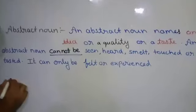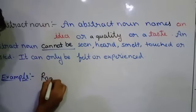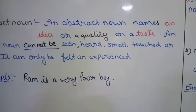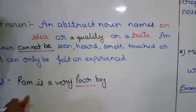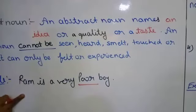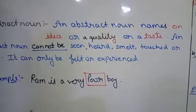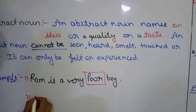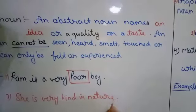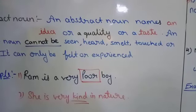For example: 'Ram is a very poor boy.' We cannot see the poverty of Ram, but by the behavior and situation of that person, we can feel and experience the poorness. Another example: 'She is very kind in nature.' The kindness of her we are not able to see, but we can experience it, we can feel it. So that is called an abstract noun.